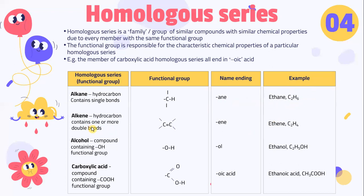Next, let's look into alkene. Alkene consists of hydrocarbons that contain one or more double bonds. The functional group looks like C=C, surrounded by H. The name ending is -ene, and the example given is ethene, C2H4.